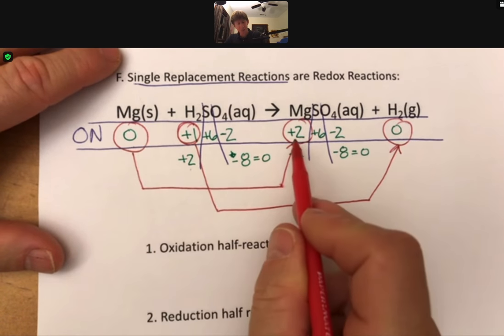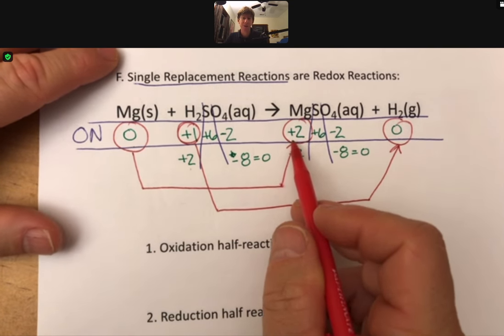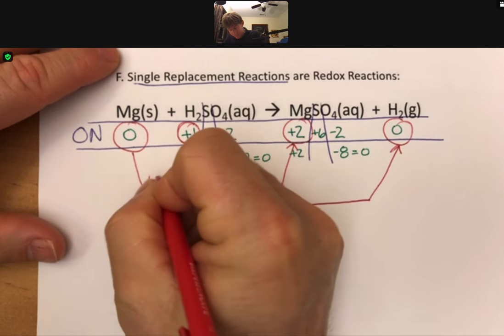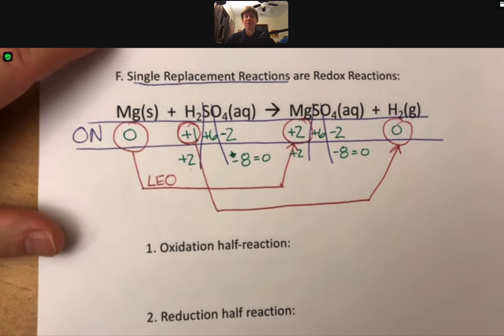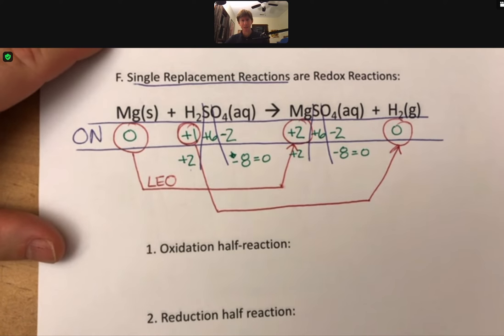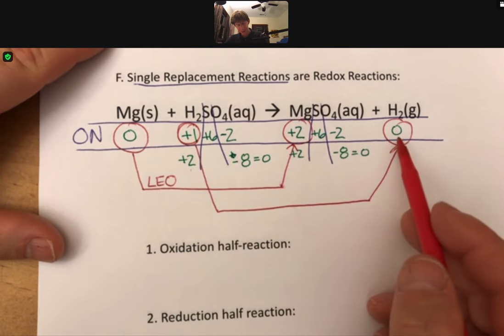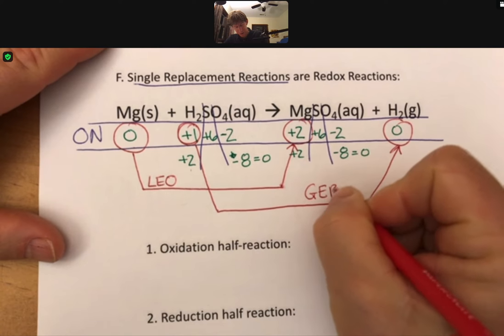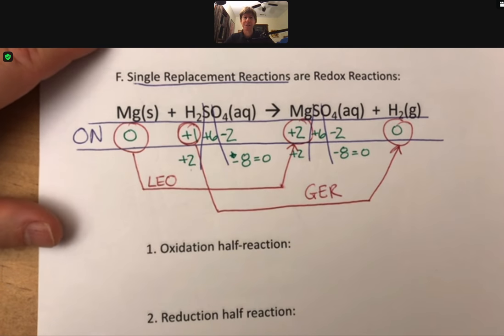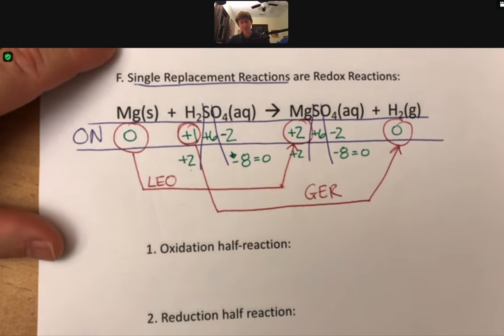Zero to plus two is going to be our LEO, our lose electrons oxidation, because it's losing negative things and becoming more positive. And plus one to zero, that's going to be our GER, because it's gaining electrons there.